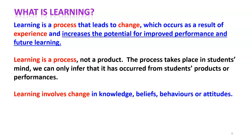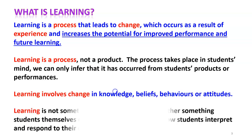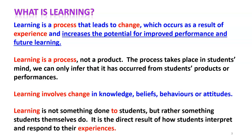Learning involves change — change in knowledge, change in beliefs, change in behavior, and change in attitude of the student. Because of our classroom teaching-learning process, there should be change in the knowledge level, beliefs, behavior, or attitude of the student. Learning is not something done to the students; it is rather something students themselves do. Outcome-based education is student-centric learning — students themselves have to engage in the learning process. It is a direct result of how students interpret and respond to their experience. They have to gain experience inside the classroom, because only through experience will you find change in knowledge or attitude.